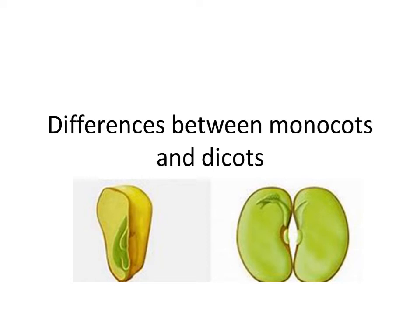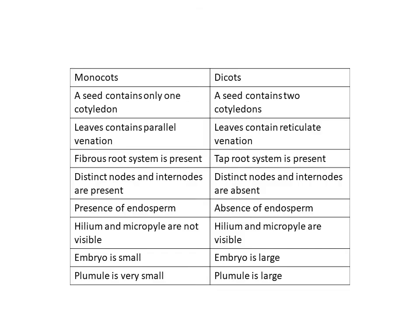Monocots are seeds which contain only one cotyledon, and dicots contain two cotyledons. The leaves of monocots contain parallel venation — like in maize, you can see the veins run parallel. But in the case of dicots, the leaves have reticulate venation, like in a rose.